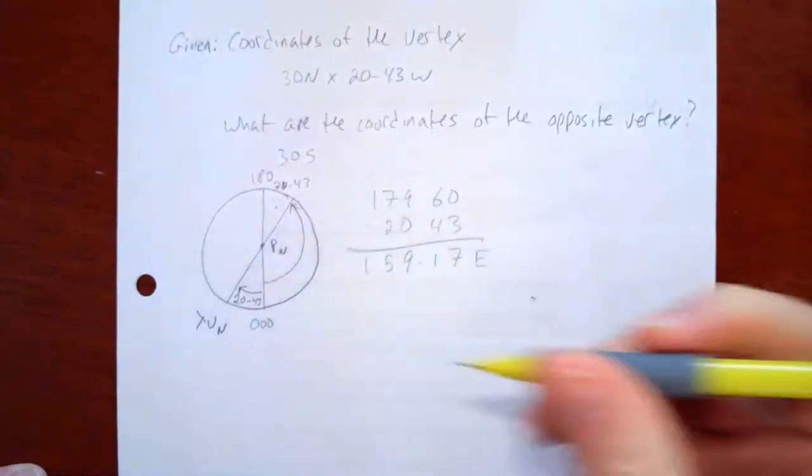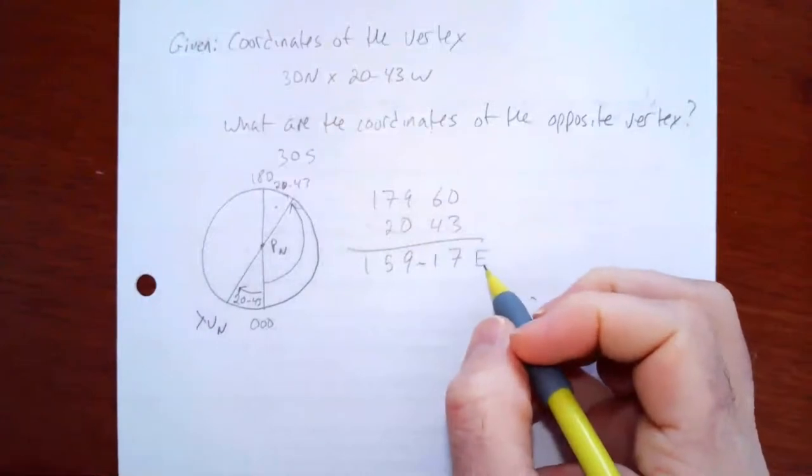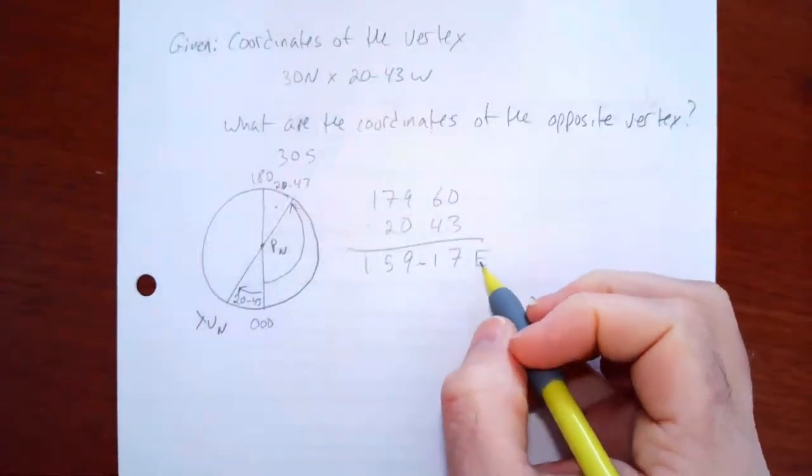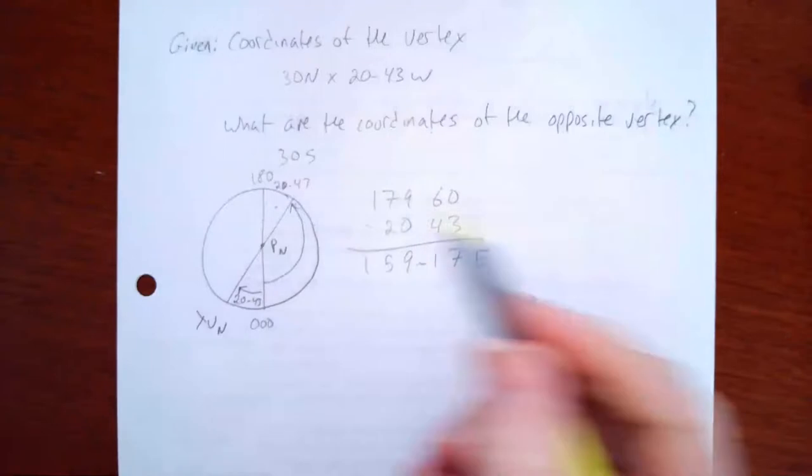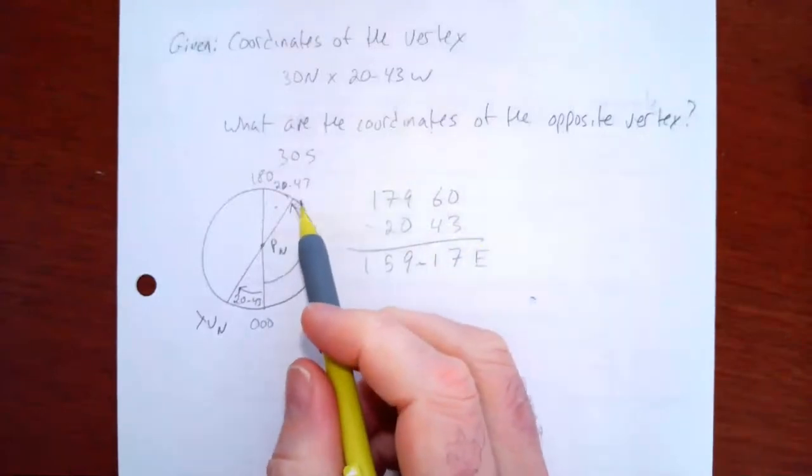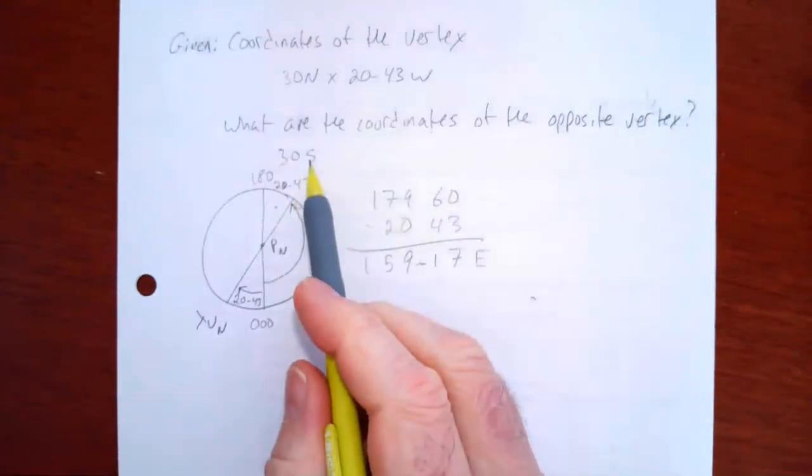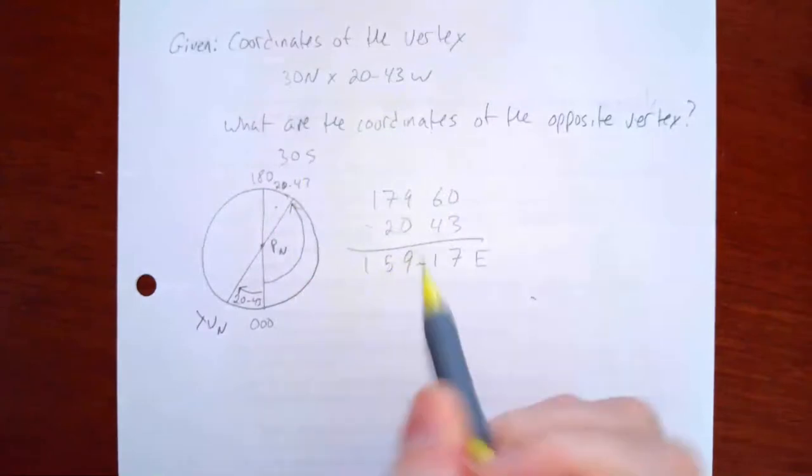So my answer, what is the longitude of the vertex in the southern hemisphere is 159°17' east. So in fact, the coordinates of the southern hemisphere vertex are going to be 30 degrees south by 159°17' east.